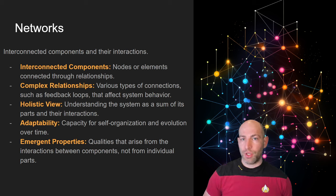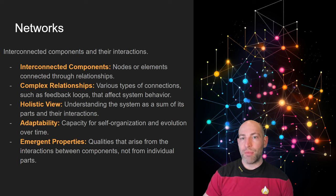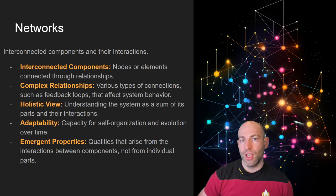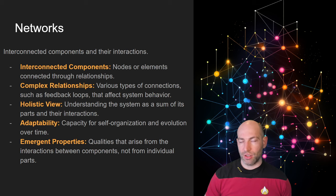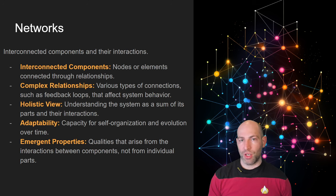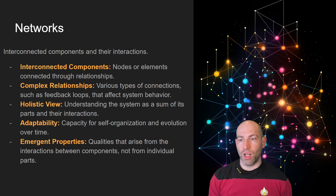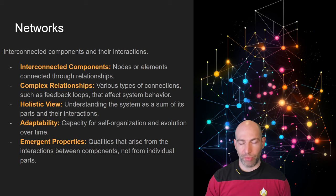A holistic view is important: a network is a type of entity that emerges from the collection of independent components. It is a kind of system that takes on a life of its own. There's some adaptability and other emergent properties that come from networks. Adaptability refers to a network's ability to change — some networks are very structured and rigid, while others are very plastic and changeable.